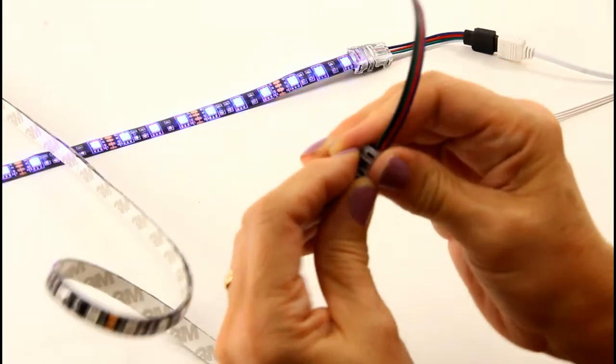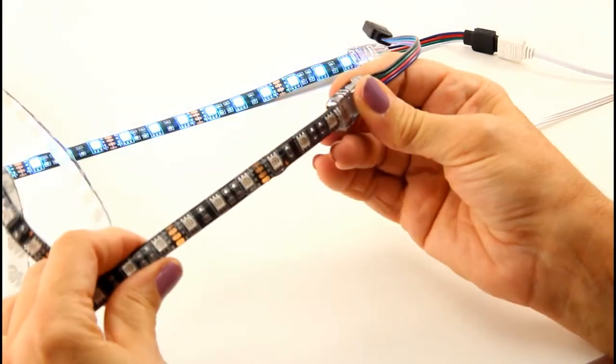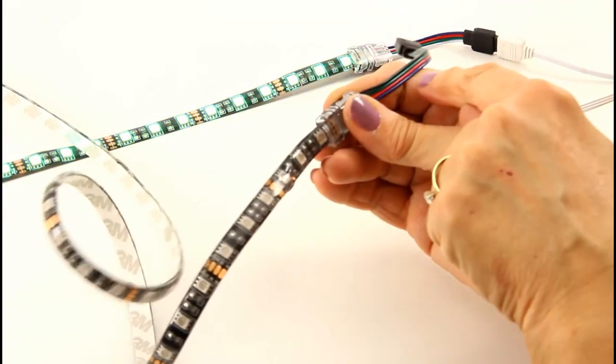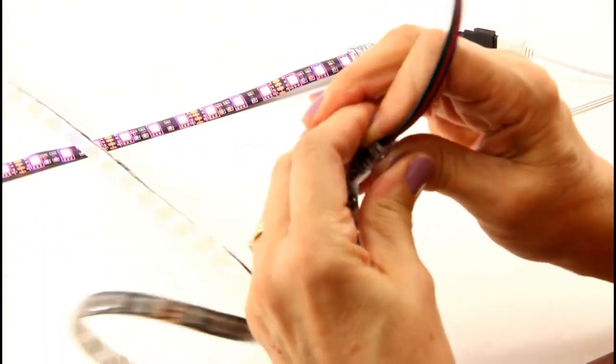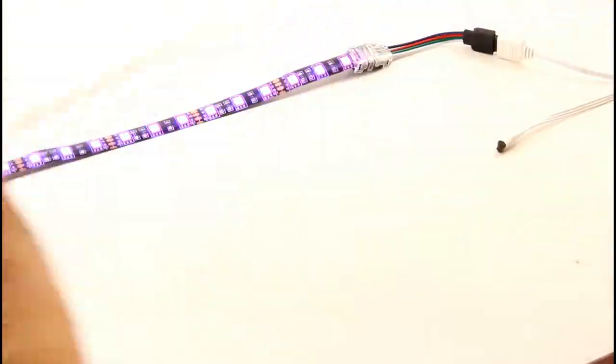Once you get it in, just snap it close. Make sure both ends on either side you have the ground and the power going in the same direction. And that's all there is to it. Now we're ready to plug it into our RGB LED power box.